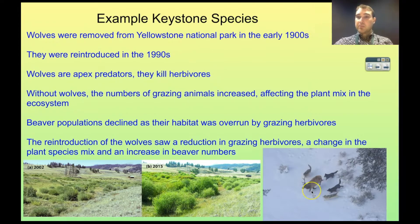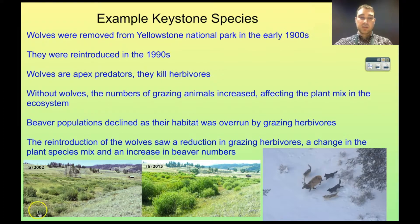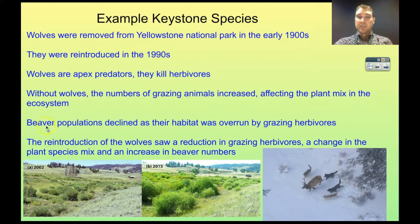Without the wolves, the number of these big grazing herbivores increased significantly, and the impact of that is a reduction in plant cover since they're grazing lots of plants. Here we have a picture of before the wolves were introduced to this area of Yellowstone Park — you can see the trees are being pared back by the herbivores eating them. Another impact was that because there were large numbers of grazing animals, beavers — which require larger trees and smaller bushes — had their habitat overrun by the grazing herbivores, so the beaver population decreased as well.